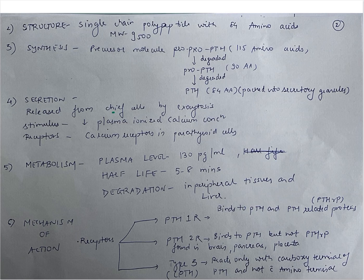Now let's study the structure. PTH is a single chain polypeptide with 84 amino acids and a molecular weight of 9500.